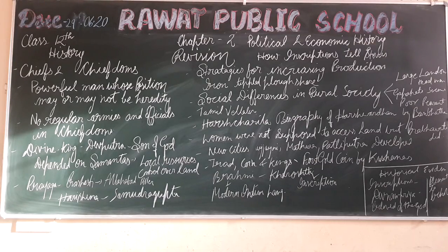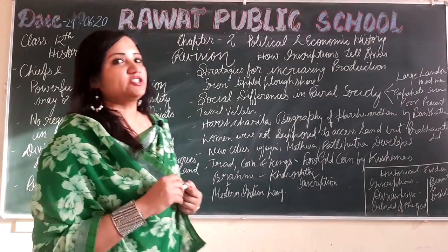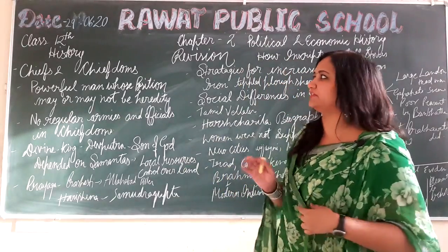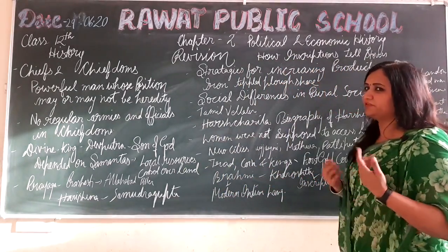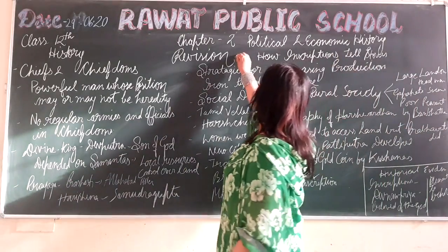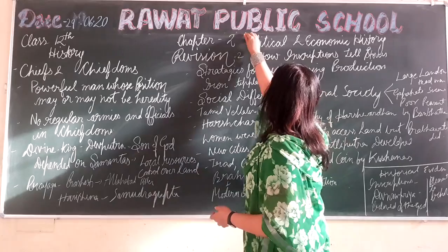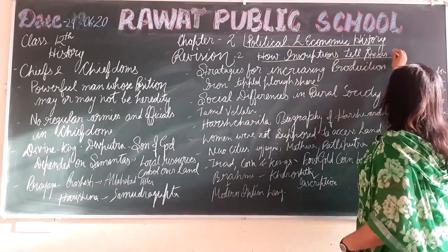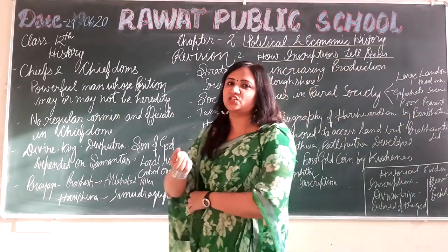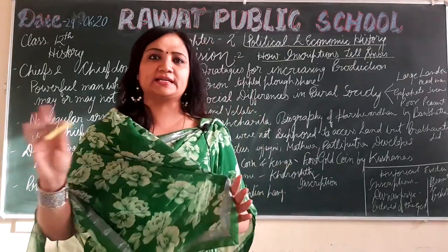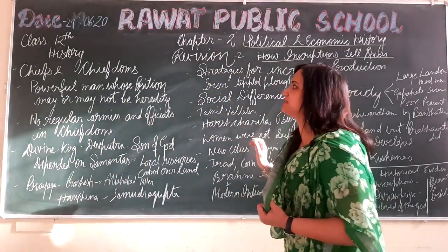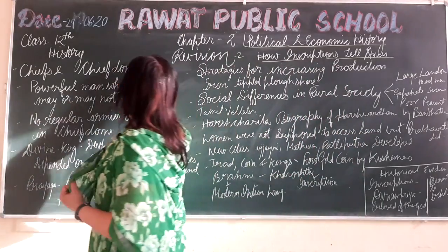Namaskar everyone. Today we are going to revise chapter 2 of history. We have already done revision 1, so now in revision 2 we are going to revise the chapter. The name of the chapter is Political and Economic History: How Inscriptions Tell Stories. The chapter is about kings and kingship. Here we are going to revise the topic: chiefs and chiefdoms.